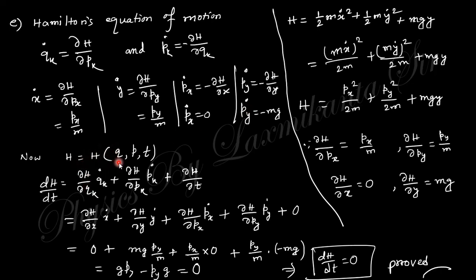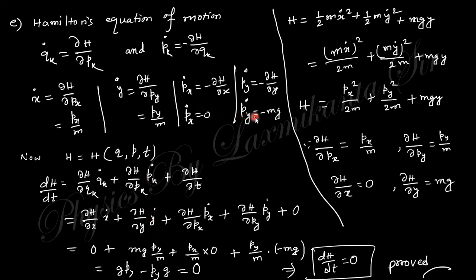The Hamiltonian is a function of generalized coordinates, generalized momenta, and t. Therefore dH/dt = (∂H/∂qk)·q̇k + (∂H/∂pk)·ṗk + ∂H/∂t. Substituting ∂H/∂x = 0, ∂H/∂y = mg, ẏ = py/m, and ∂H/∂t = 0, and putting in all four expressions, the terms cancel and we finally obtain dH/dt = 0.